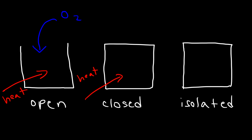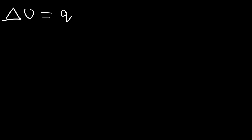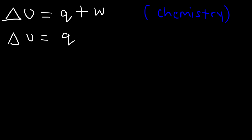In an isolated system, neither energy nor matter can enter or leave. The mass within an isolated system is fixed and the total energy also doesn't change. The equation for the change in internal energy of a system is Delta U = q + w, which is what you'll see in a typical chemistry textbook. Here, q represents the heat energy that flows into or out of the system, and w represents work.